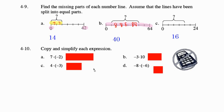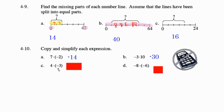Here you don't really need to show work. 7 times negative 2 is negative 14 — 7 groups of negative 2 is negative 14. Here you can think of this as 10 groups of negative 3, which is negative 30. 4 groups of negative 3 is negative 12. And here we have a negative times a negative — the opposite of a negative makes it positive. And then 8 times 6 is 48.